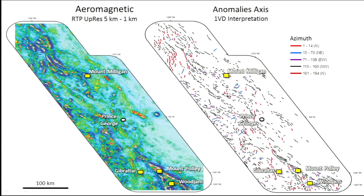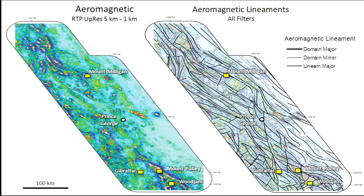This map shows a simple azimuth exercise. You can already see that the north-northwest, orogen-parallel lineaments are the most common ones. Locally you can see north-south trending ones in red, and some orogen-perpendicular smaller anomalies trending in a northeast orientation.